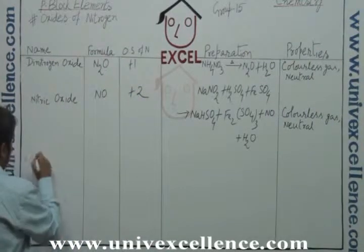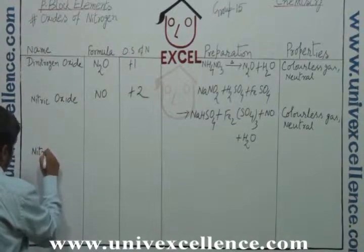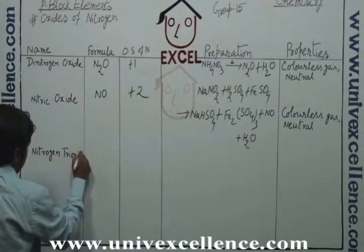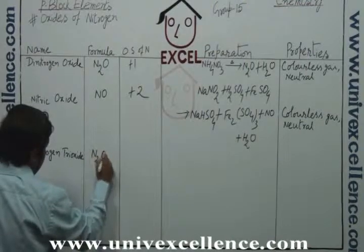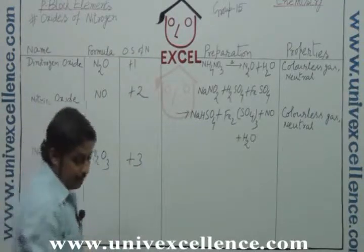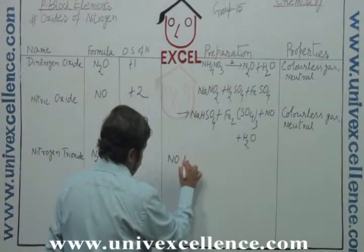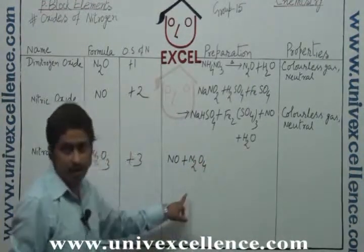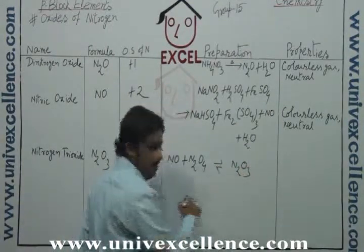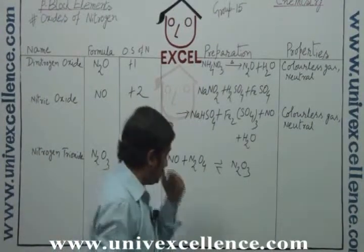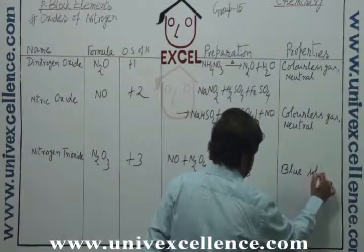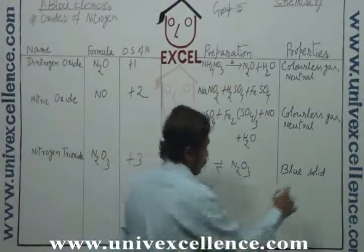Now the third one is nitrogen trioxide. Formula is N2O3, where the oxidation number of nitrogen is plus three. In that case, the preparatory measure is that NO can react with dinitrogen tetraoxide N2O4 and finally the formation of N2O3 at higher temperature. It is a blue solid, blue color compound, and that will be acidic in nature.